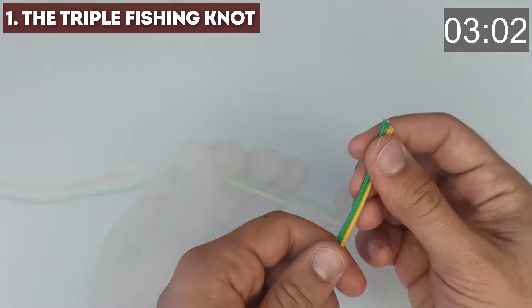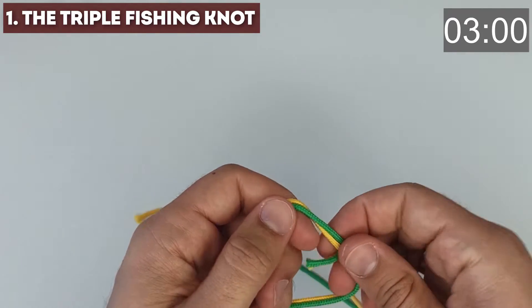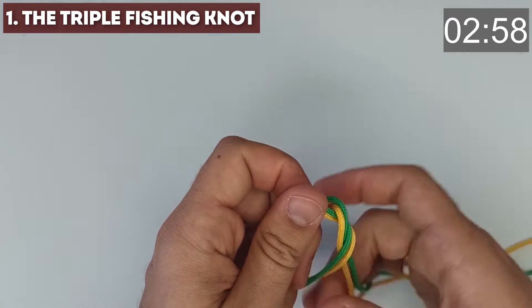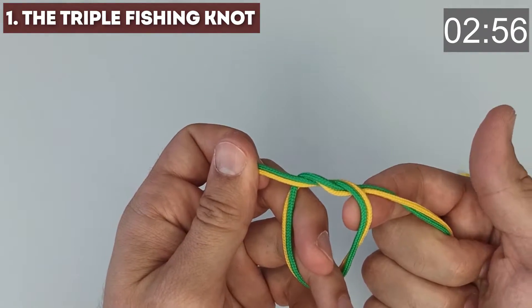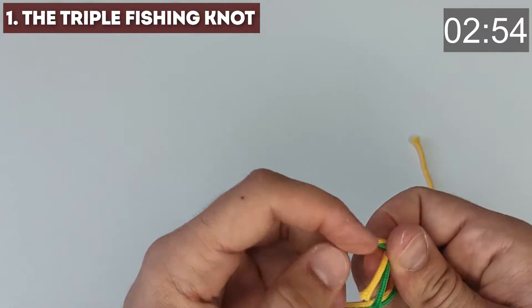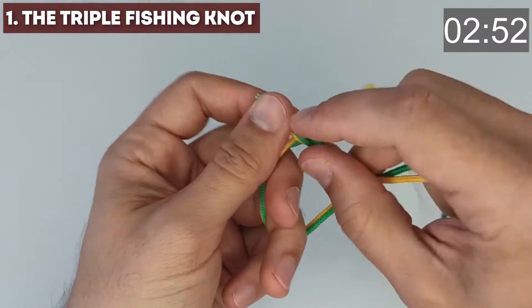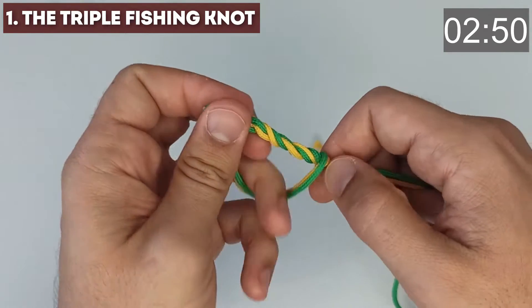Fold two lines. Make a simple knot and two more turns to form a triple knot. Wet the fishing line and slowly pull the knot together.